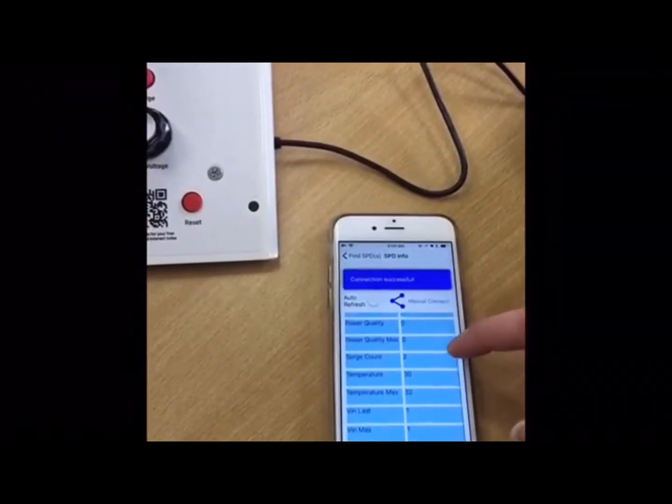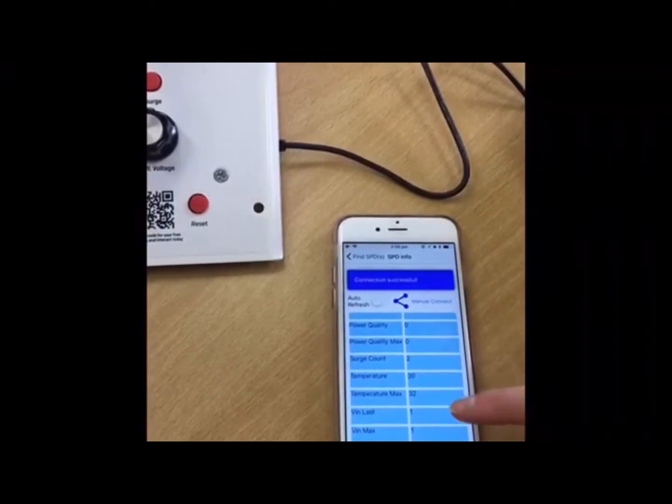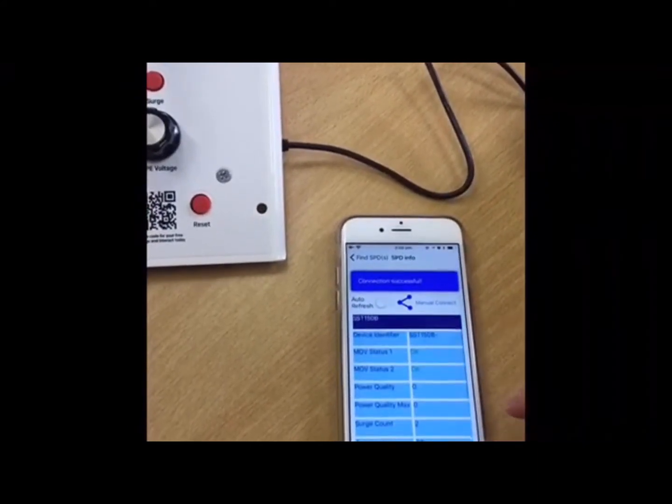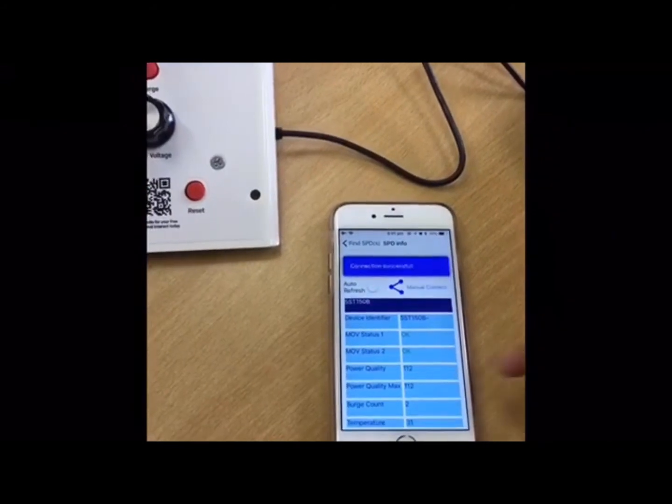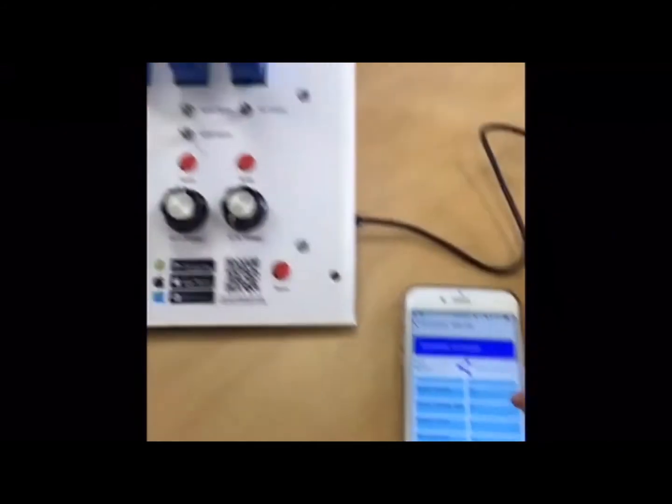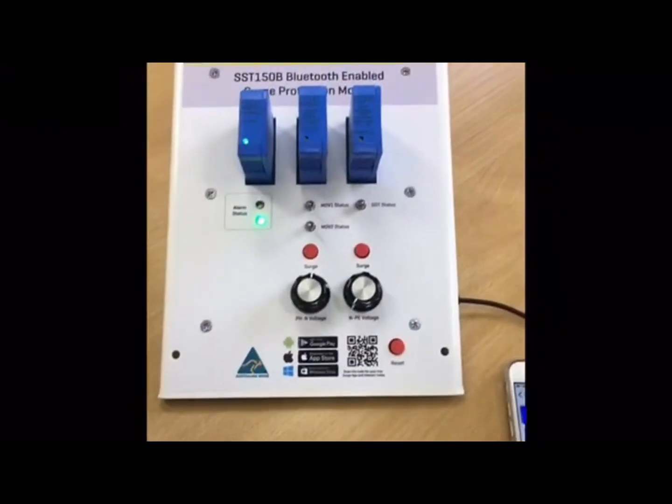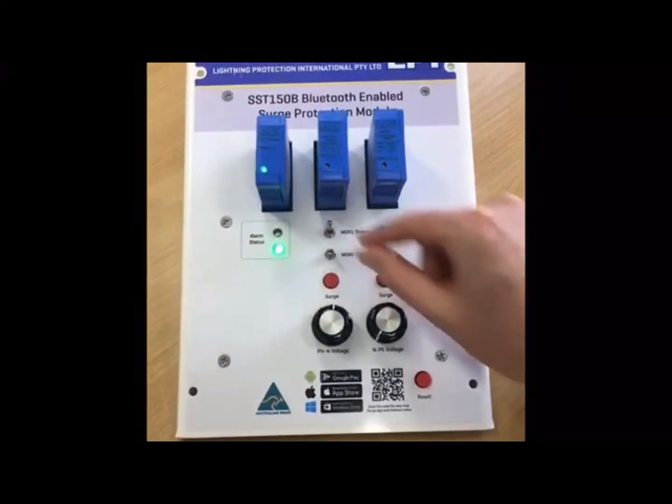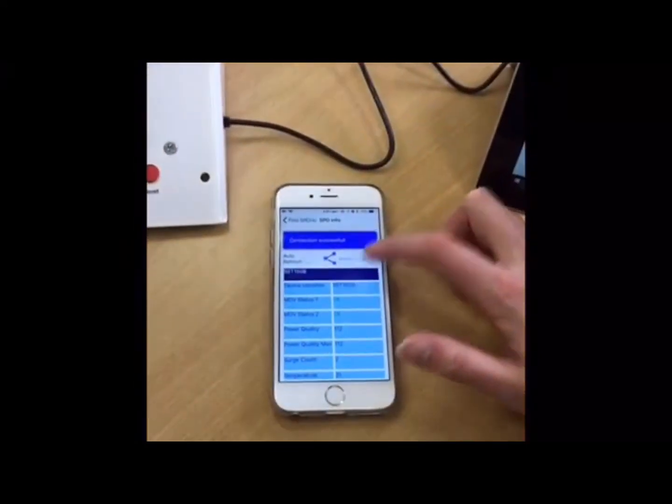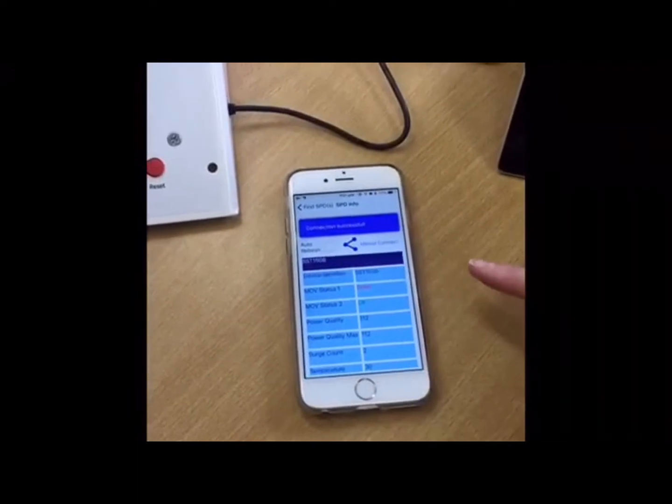The SST150B modules use two metal oxide varistors or MOVs as part of its hybrid protection circuit. To simulate an internal fault, toggle either the MOV1 or MOV2 switch. You can now see the MOV status in the SPD app has changed to fail.